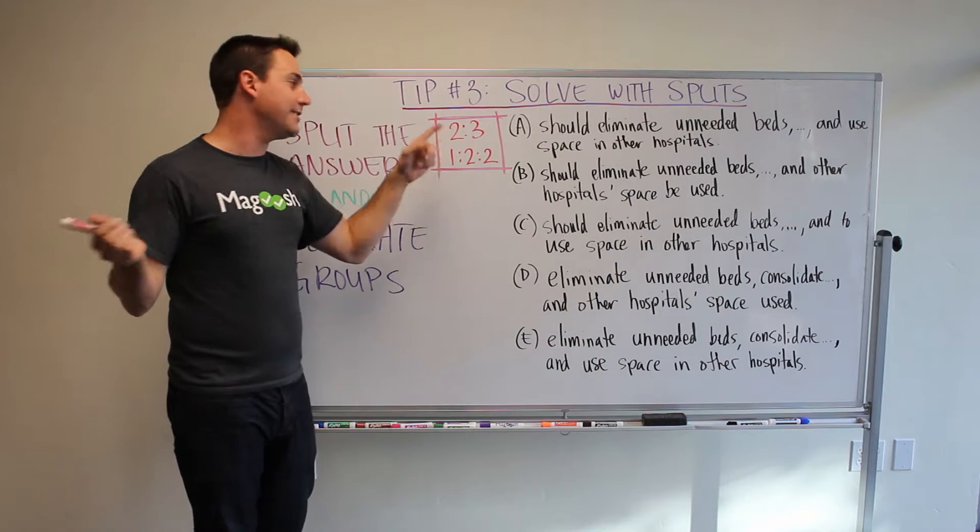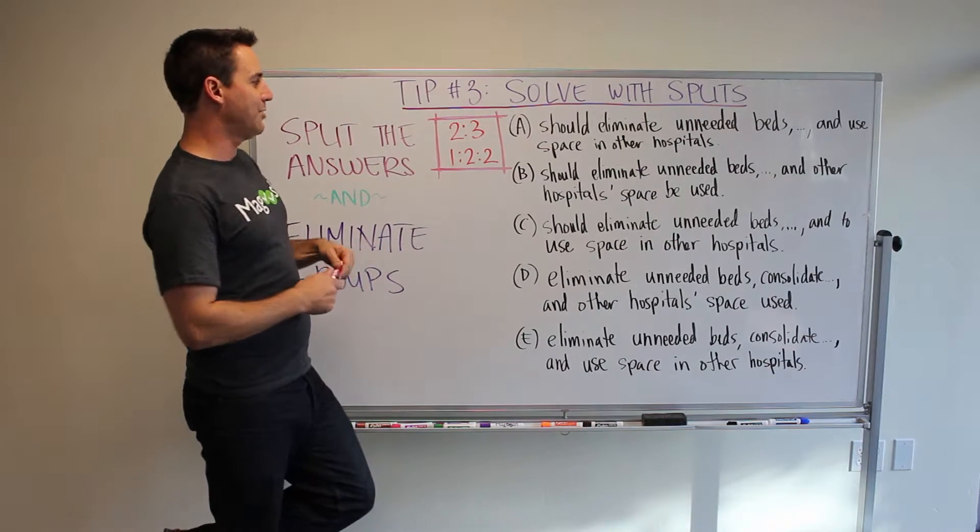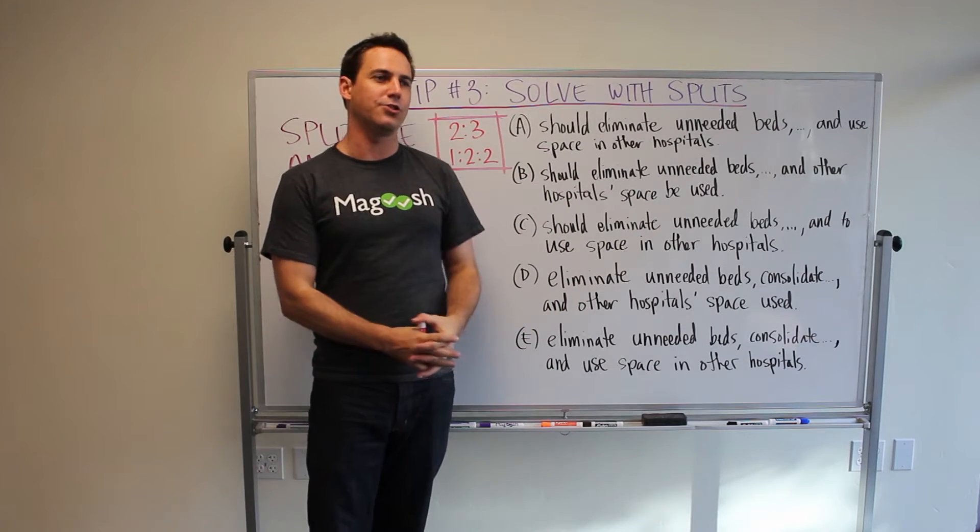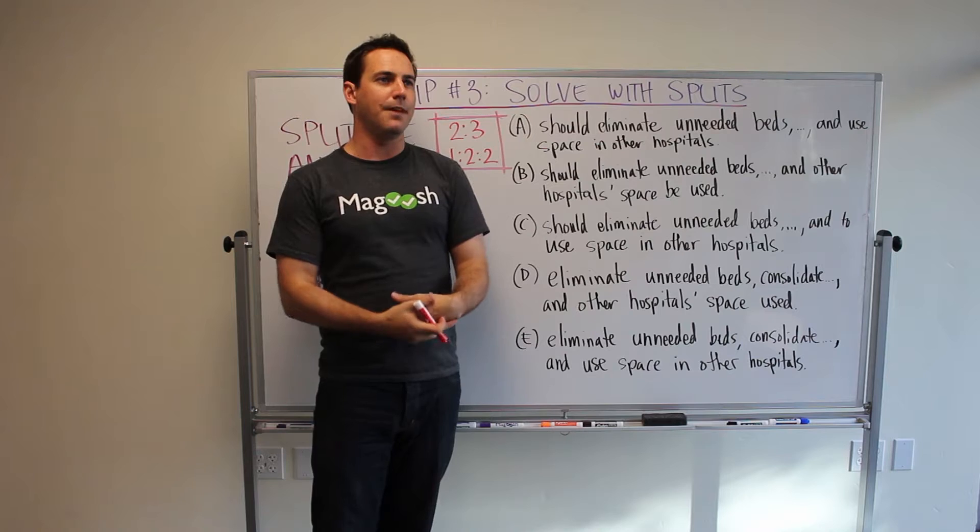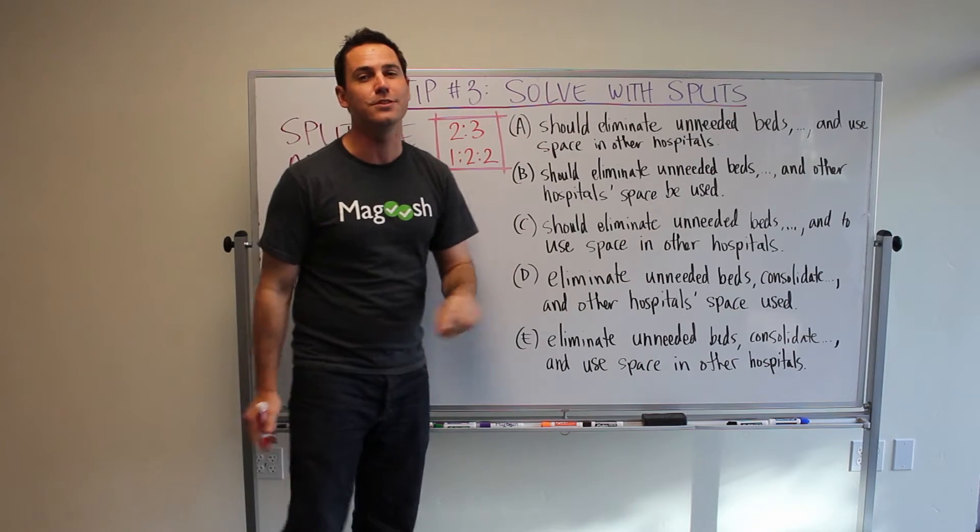There's two different types of splits, there's two, three splits, and one, two, two splits to look for. And often times there's multiple splits within a set of answer choices, so for example you might be able to group it into a two, three split and a one, two, two split.